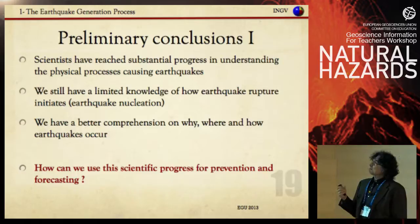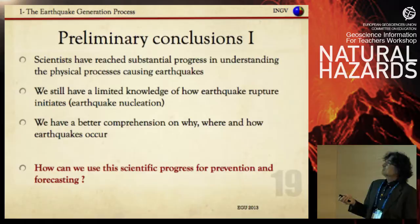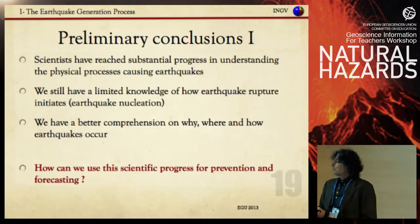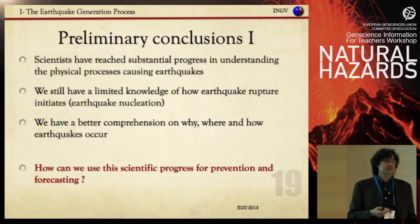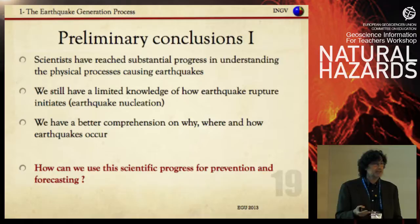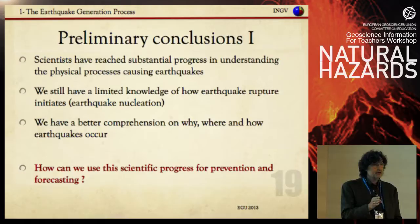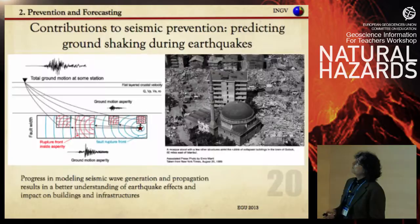Conclusions from the science: scientists have achieved substantial progress in understanding the physical processes causing earthquakes. We still have very limited knowledge of rupture initiation because we don't have enough data. We have a better grasp of why, where, and how earthquakes occur. Now, how can we use this scientific progress for prevention and forecasting? Society asks us 'when,' but that is a mistake — if you have good prevention and planning, 'when' is secondary. Your primary goal is to ensure your house, school, and hospital are built to resist the expected magnitude on the nearby fault.